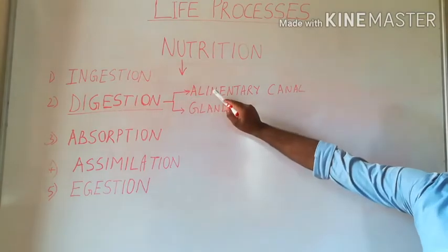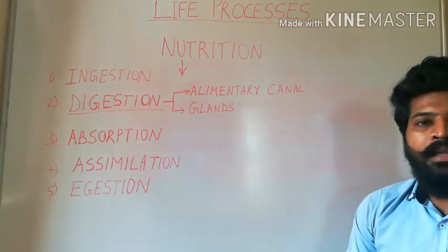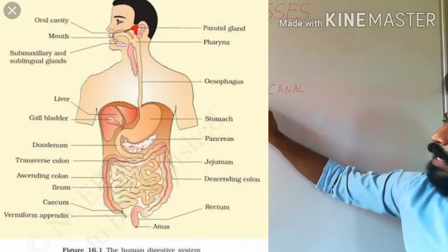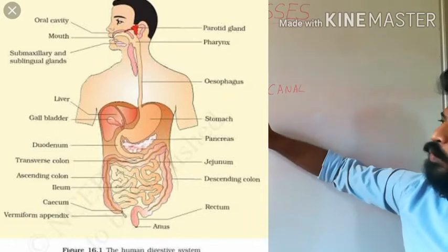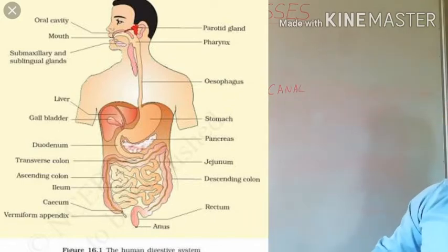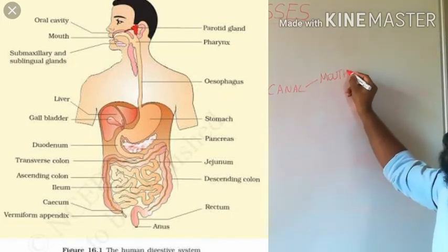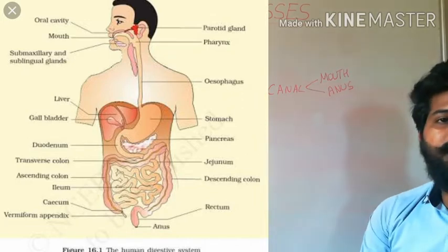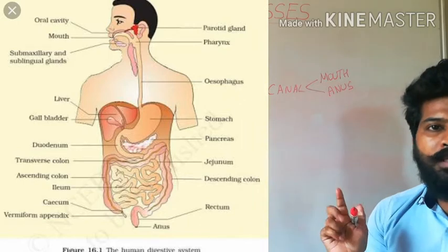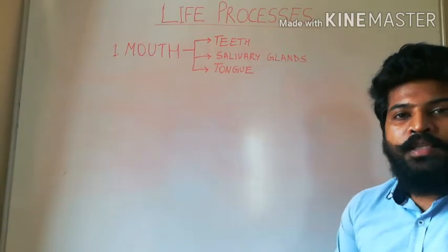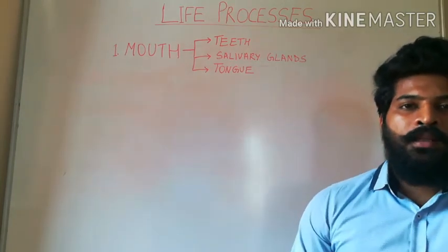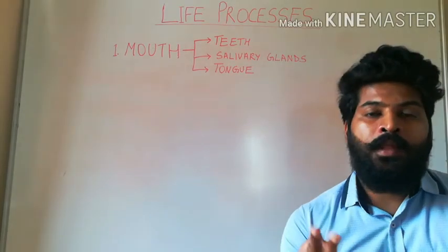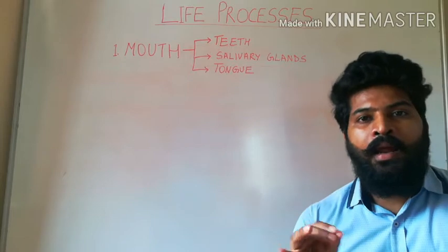Digestion takes place in a long tube called the alimentary canal, which is a long hollow tube ably assisted by different glands present in the body. The alimentary canal begins with the mouth and ends with the anus, so the digestive system in human beings is complete with two separate openings. Human beings consume a wide variety of food substances, and the three important nutrients present in most food items are proteins, carbohydrates, and fats and lipids, along with some roughage.